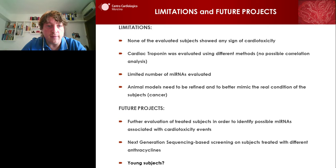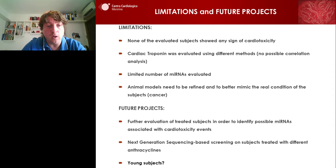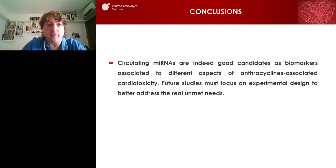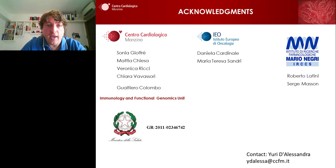We have future plans for the research. We would like to further evaluate human subjects to identify new microRNAs, which we would analyze by next generation sequencing in order to look at as many microRNAs as possible. One thing that would be useful would be analysis in young subjects suffering from cancer who have a long expected life, so we would like to follow them over time. In conclusion, we demonstrated that circulating microRNAs are indeed good candidates as biomarkers to be associated with cardiotoxicity and to prevent cardiotoxicity, with possible future applications.